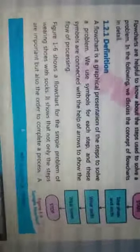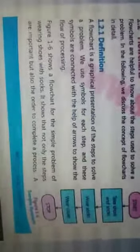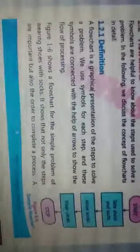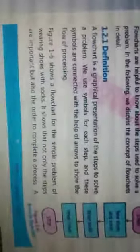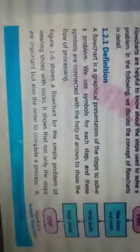We use symbols: for Start and Stop there are specific symbols, for Input and Output there are symbols, and for Processing there are symbols. All of these are connected with the help of arrows to show the flow of processing. The figure 1.6 shows a flowchart for the simple problem of wearing shoes with socks.